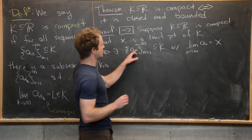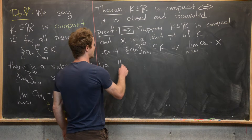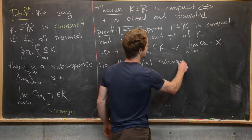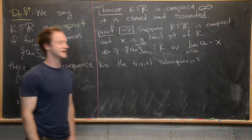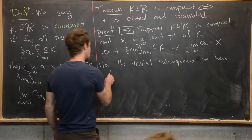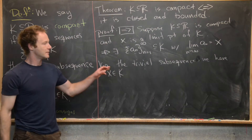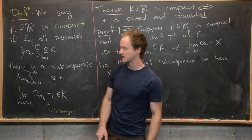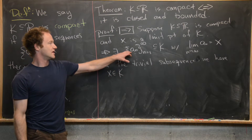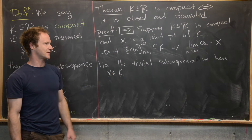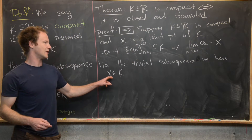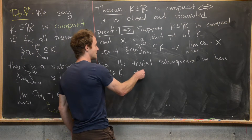Now what we can do is take the trivial subsequence of this — that is, the subsequence containing all of the elements. We have X is in K itself, because compactness says there's a subsequence converging to something in K. But all subsequences of a convergent sequence converge to the same limit, so that subsequence must converge to X, which is therefore in K. We started with X as a limit point of K and ended with X in K, so K is closed.